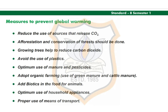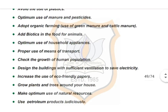Adopt organic farming, that is the use of green manure and cattle manure. Add biotic supplements in the food for animals to prevent the use of excess plant material. Make optimum use of household appliances and proper use of means of transport.